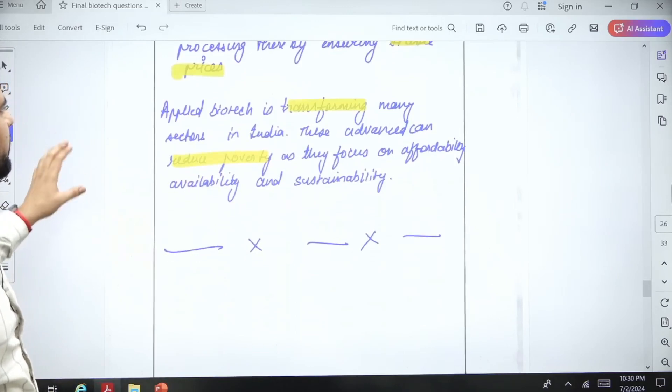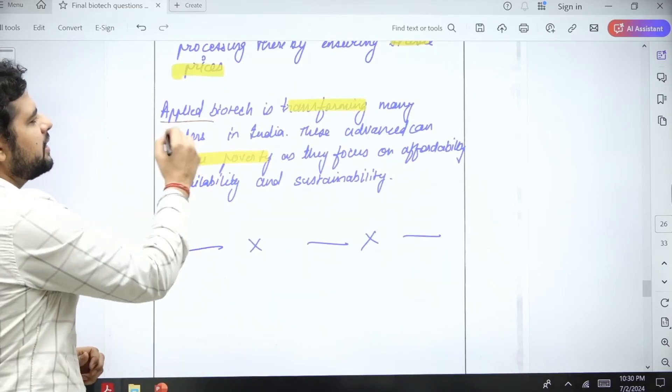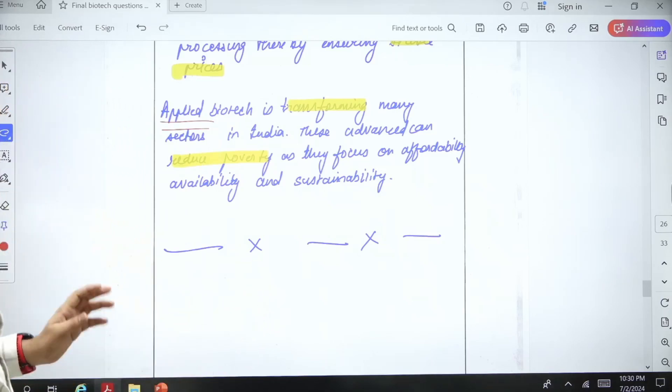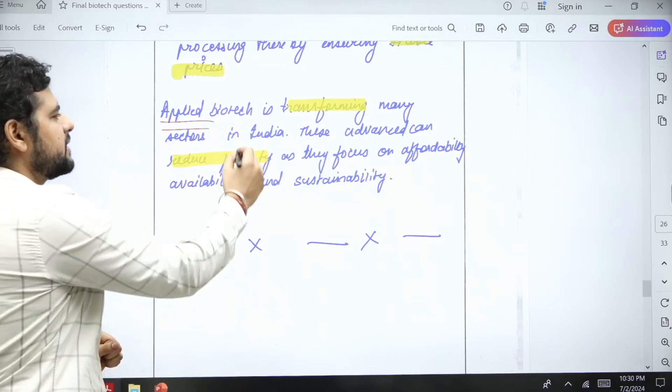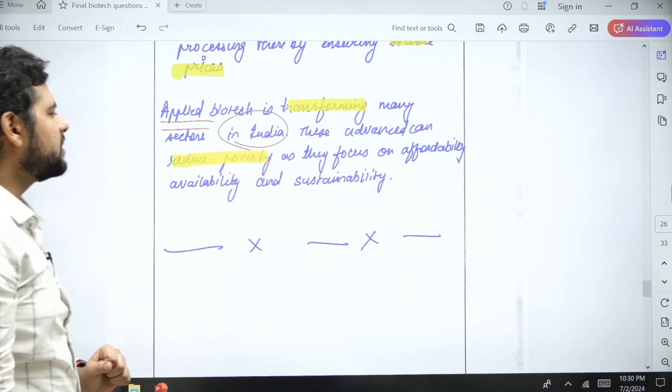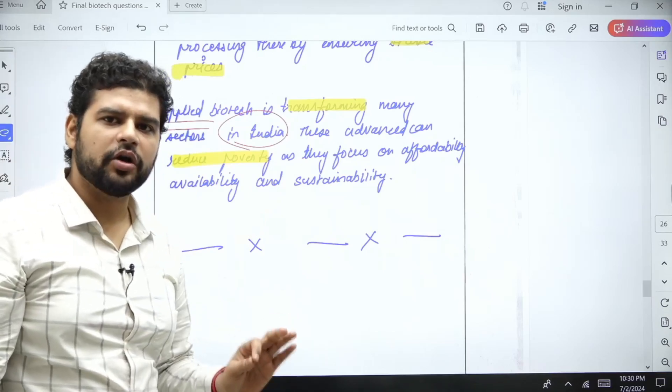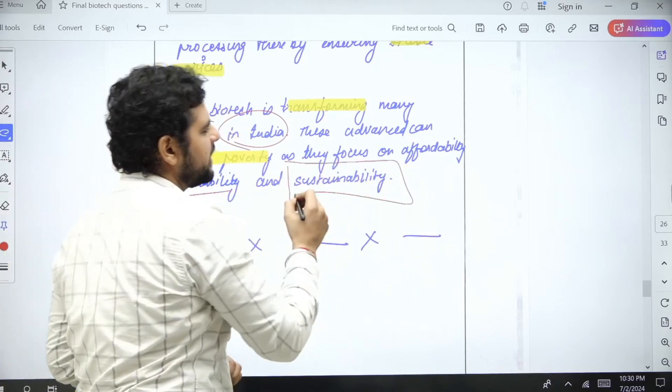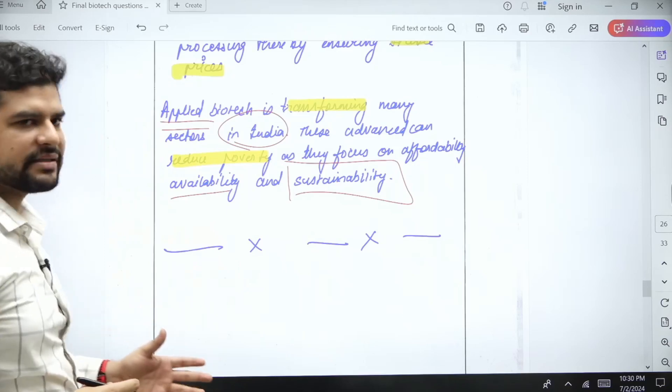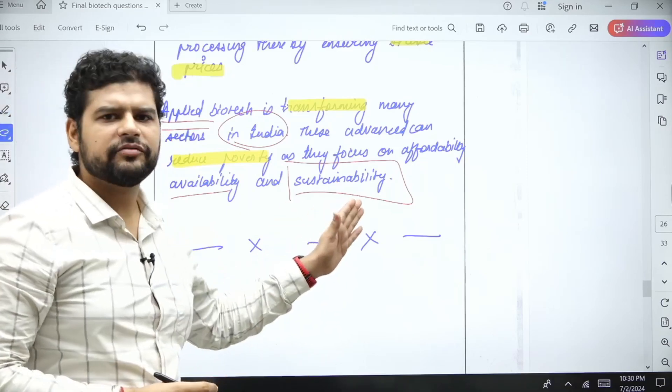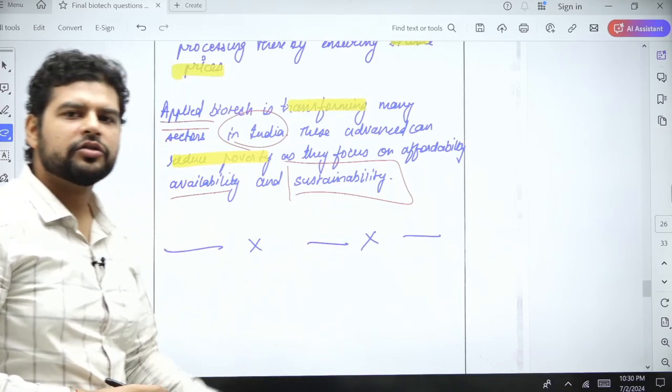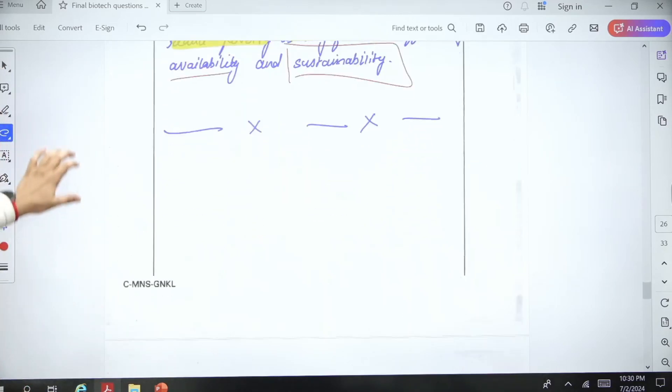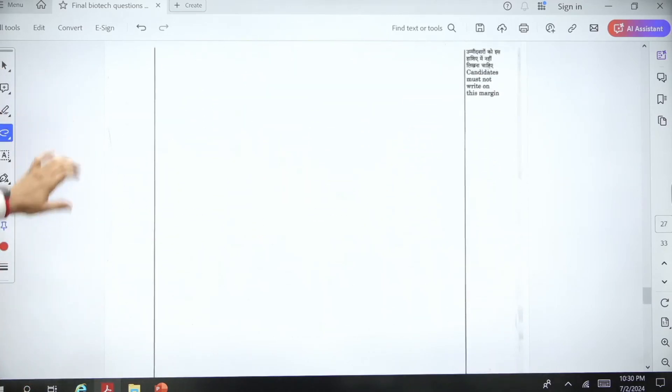We have to talk about applied biotech in the conclusion. Don't write just biotech; write applied biotech. Applied biotech is transforming many sectors in India. These will decrease poverty as they focus on affordability, availability, and sustainability. There is another word you can write: accessibility. This is how you can go about this answer. That is all for this one. We will move to the next one.